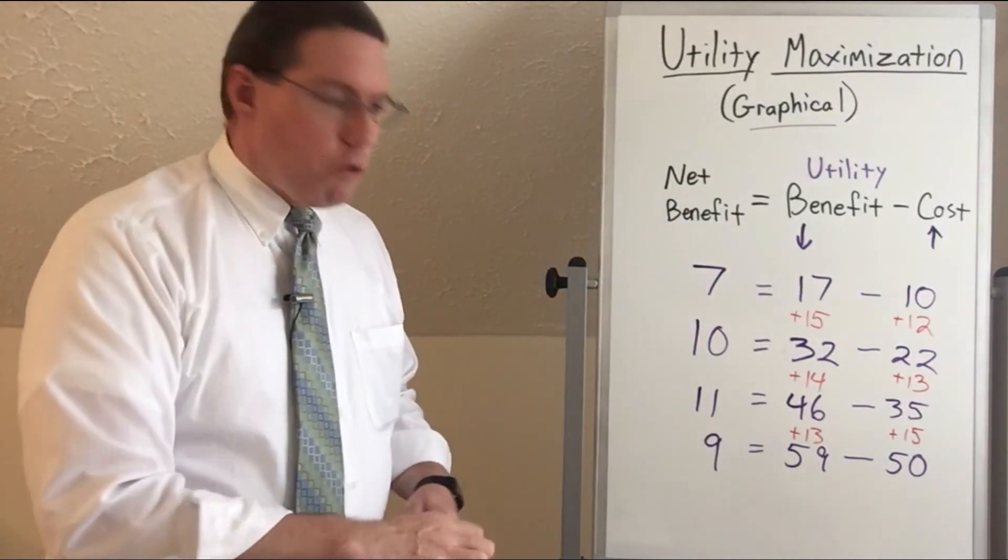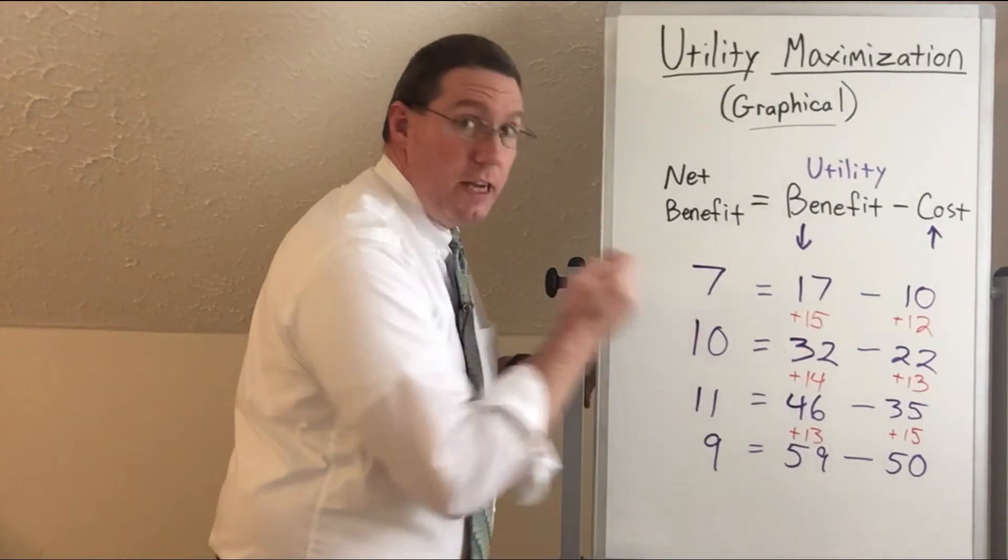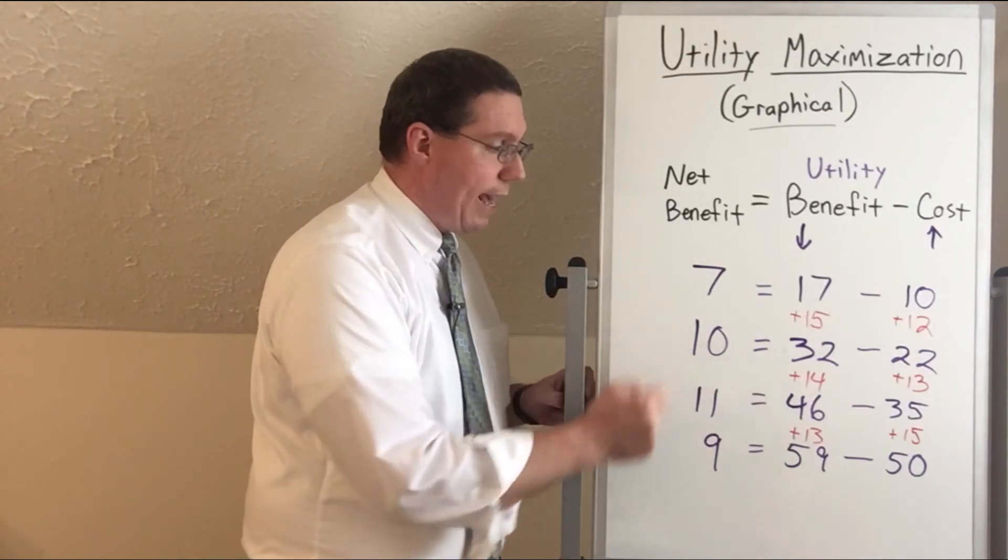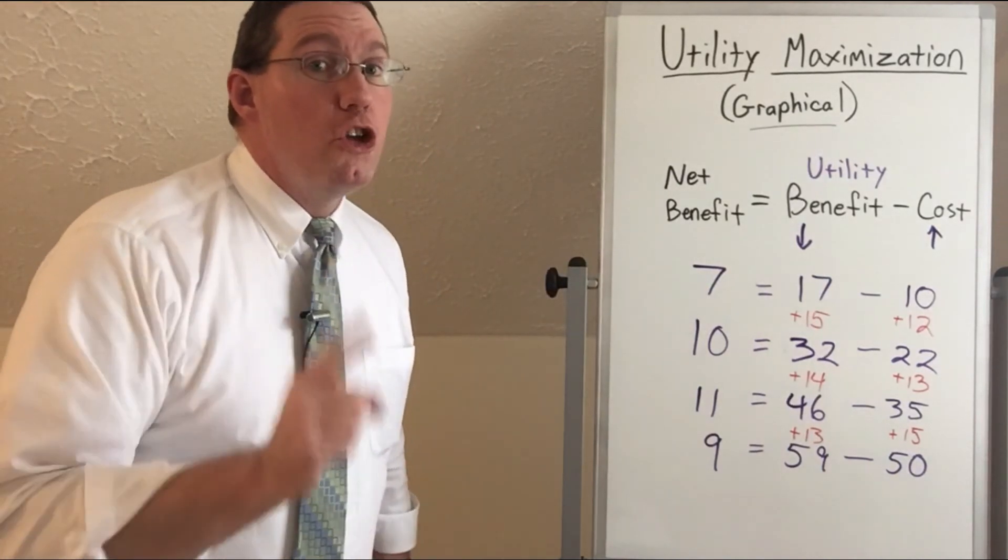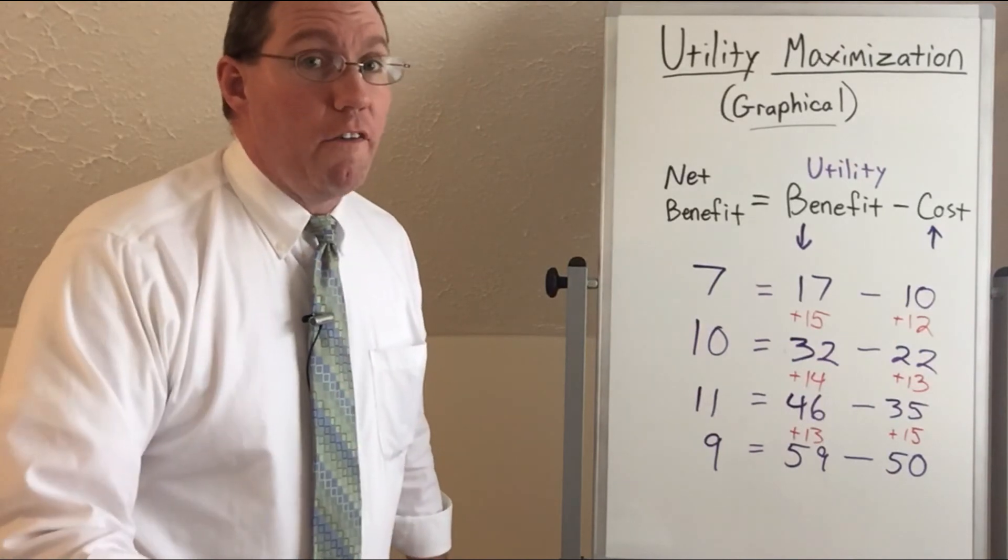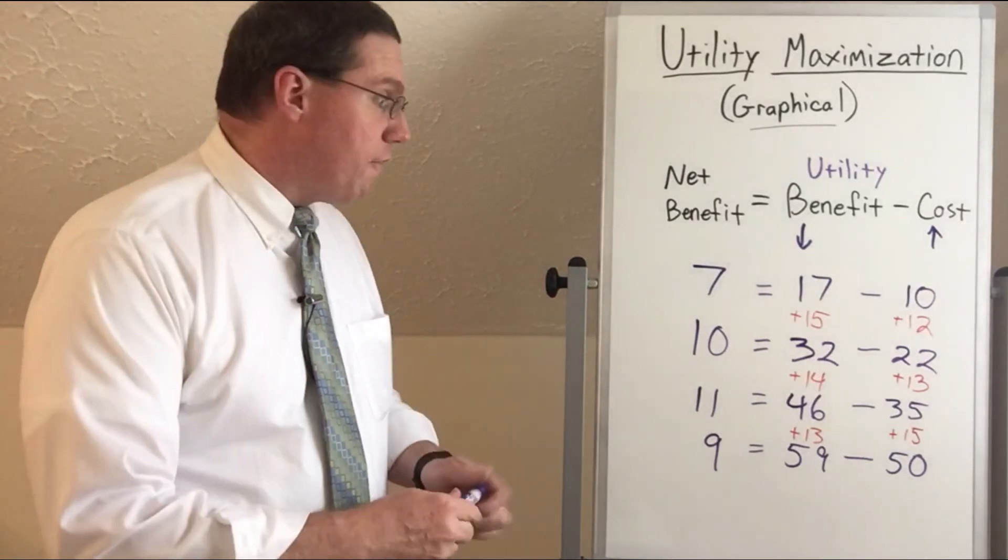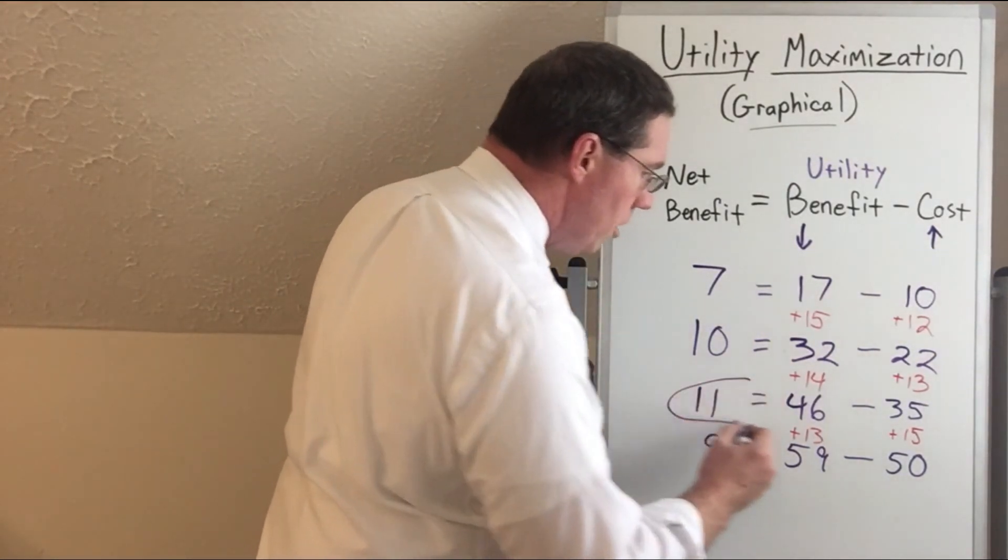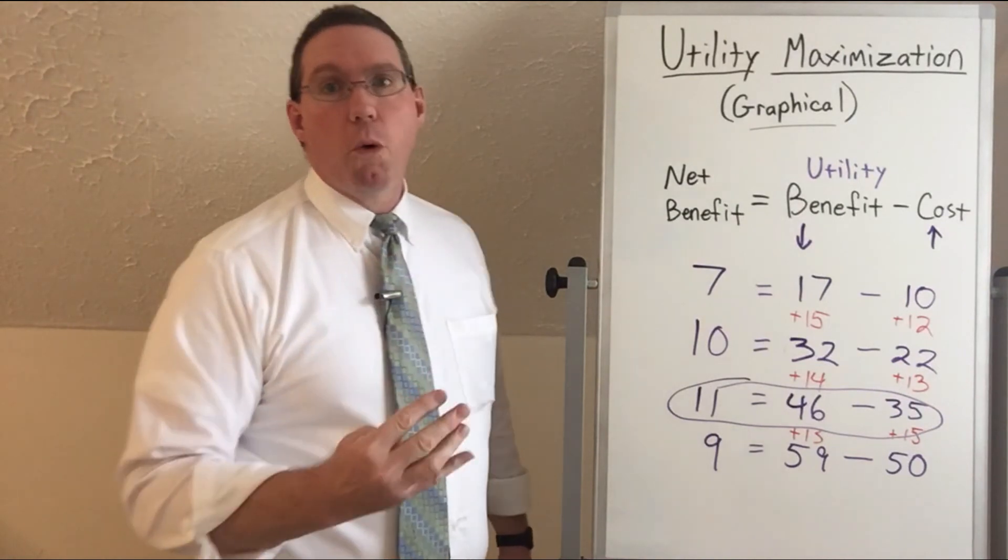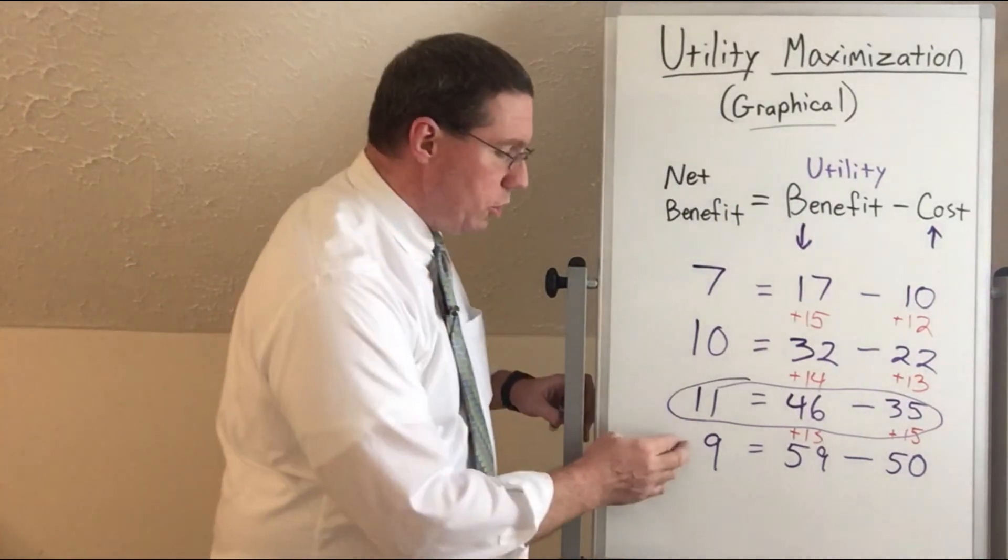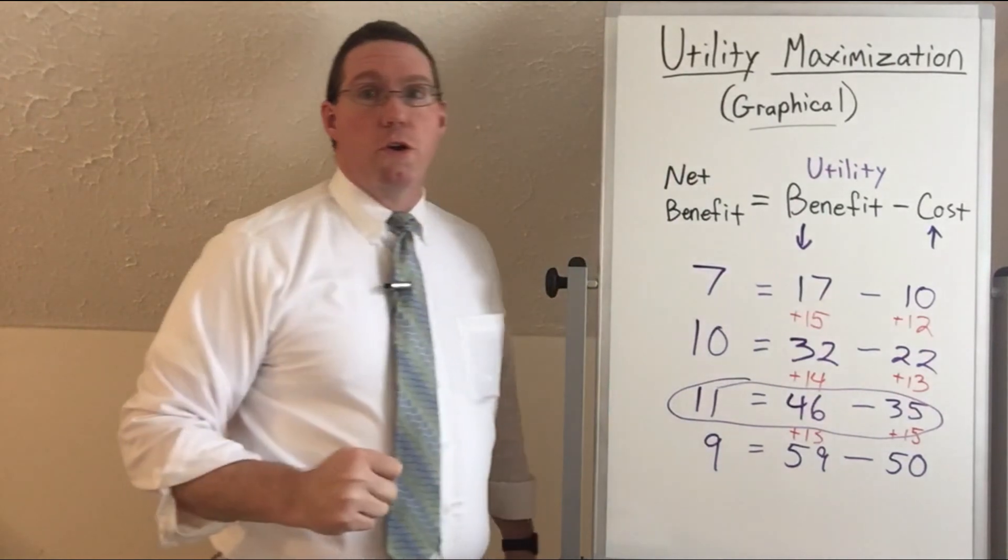We want to maximize our utility. So if you had a choice of being satisfied at a 7 or a 9 or a 10 or an 11, which one would you pick? You'd pick 11. Why? Because you are rational. Because you would rather be better off than worse off. And that's an economics thing. You are an economic agent, you are rational, you'd rather be better off. Therefore, you would choose this third line here. You would choose to consume three items and not four, because a fourth one will actually put you in a place where you achieve less utility. By consuming three, you are maximizing your utility.